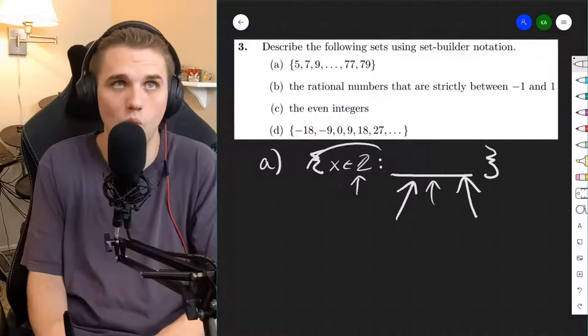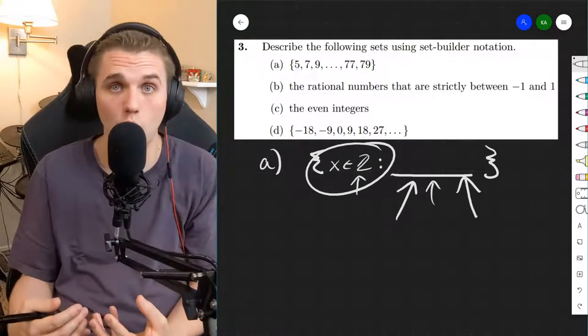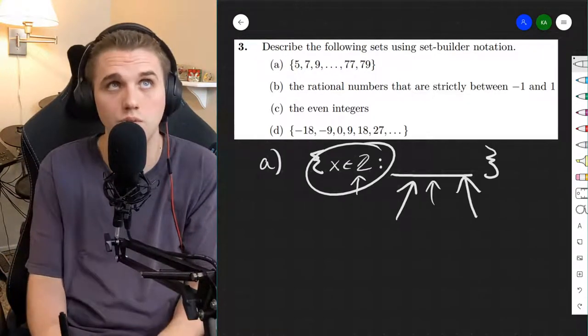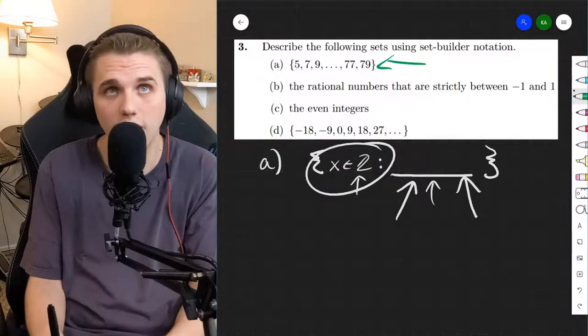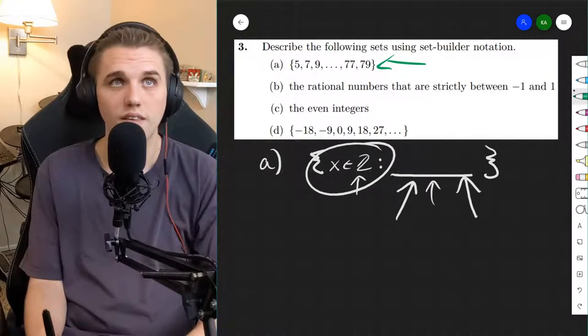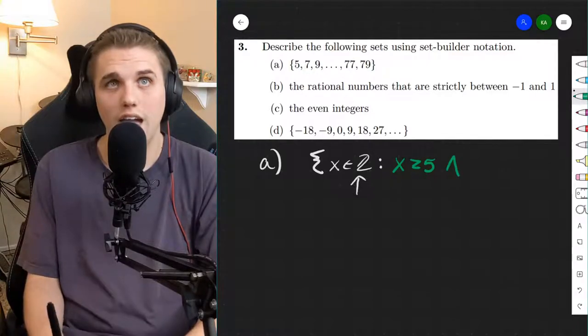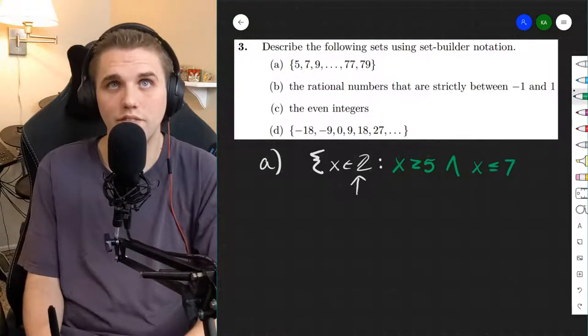Right now, we've taken all of the integers. We don't want all the integers, though. So we want to somehow minimize this down to specifically this set right here. How do we do that? Well, we need to make sure that x is greater than or equal to 5 and x is less than or equal to 79.